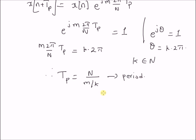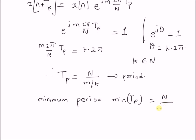Now let us look at the minimum possible period. Since the values of N and m are fixed, the minimum period is the minimum of Tp, which equals N/m times the minimum of k, because k is the only value that can be changed. So the minimum period equals the minimum of k multiplied by N/m.